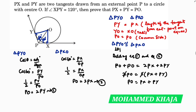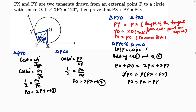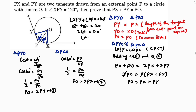So by CPCT, angle OPY equals angle OPX. Now angle OPY plus angle OPX equals 120 degrees (given). Since both are equal, let each be angle A: angle A plus angle A equals 120, so 2 times angle A equals 120, giving angle A equals 60 degrees. This is how we get 60 degrees — because the two triangles are congruent, by CPCT both angles are equal, so each is 60 degrees.